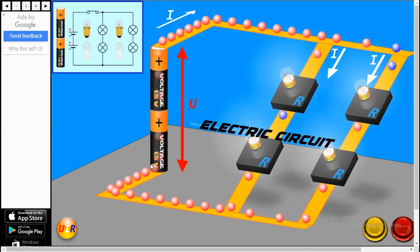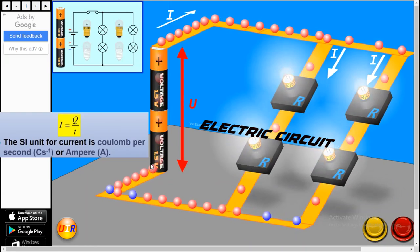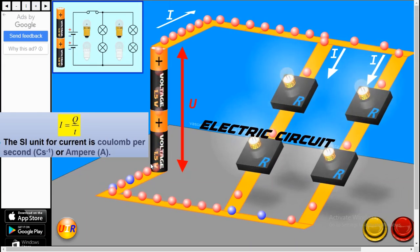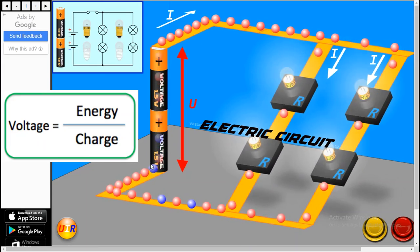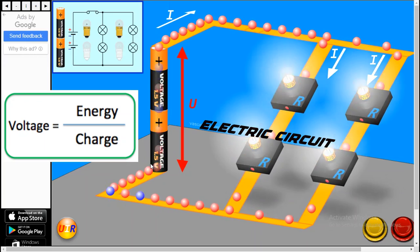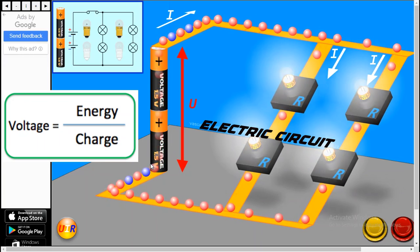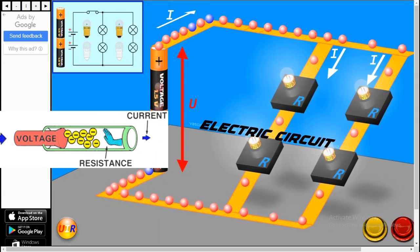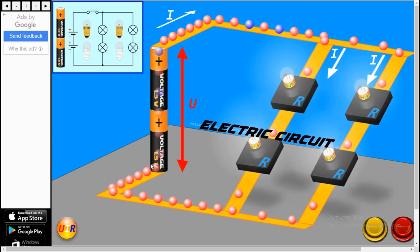Let me quickly revise. Current is the rate of flow of charges. Here is the formula. Voltage is the hidden potential behind the flow of charges. There is a formula for that. And resistance is something which opposes the flow of charges.